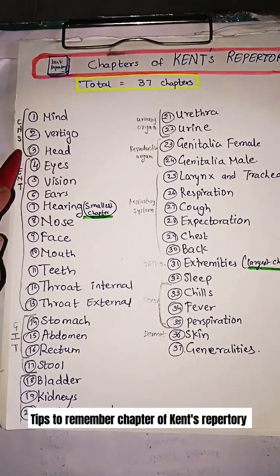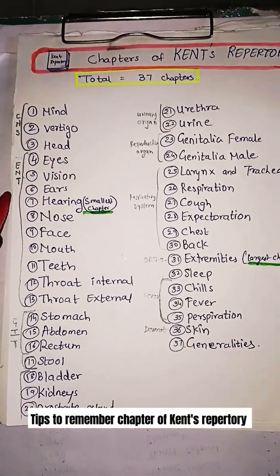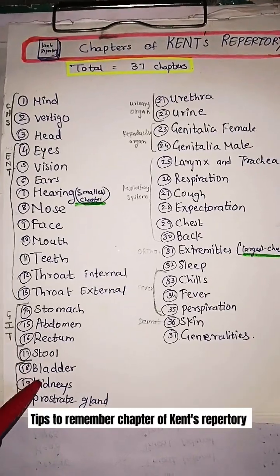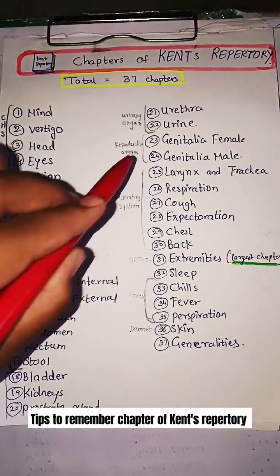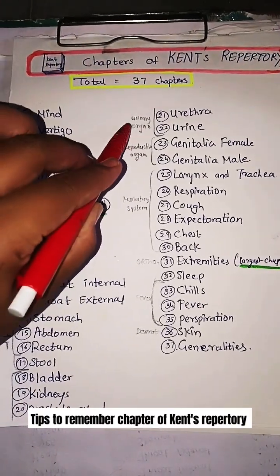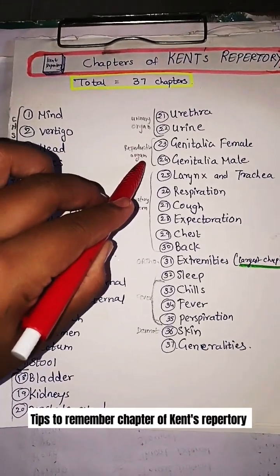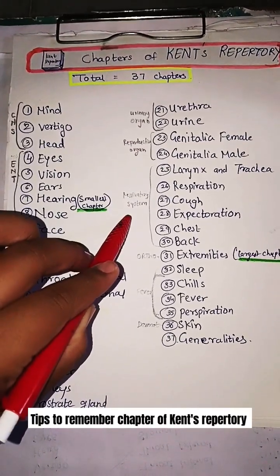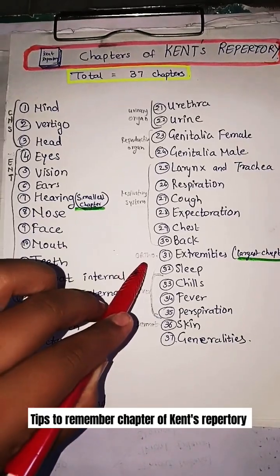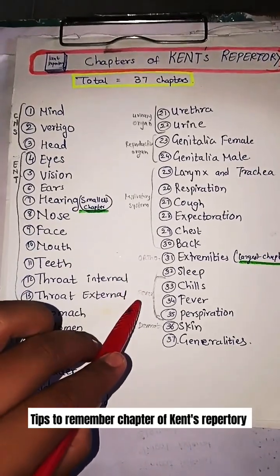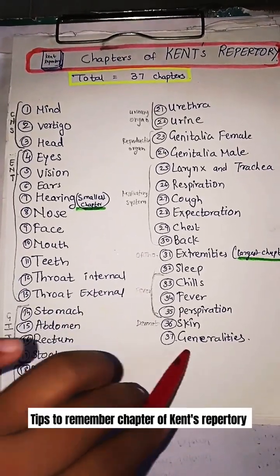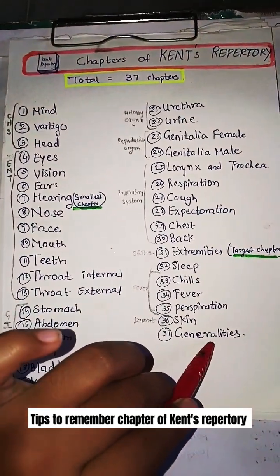The systemic arrangement begins with CNS, then ENT, GIT, Urinary Organ, Reproductive Organ, Respiratory System, Ortho, Fever, and Dermatology. The last is Generality.